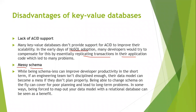Being forced to map out your data model with a relational database can actually be seen as a benefit. A schema is like an architectural plan for a building — if the architecture is not designed properly, the whole construction will not fit requirements. Similarly, in a key-value database, if you don't design properly, your data may mismatch, be lost, or be incorrect. Correcting it later takes a long time, so careful design is important.